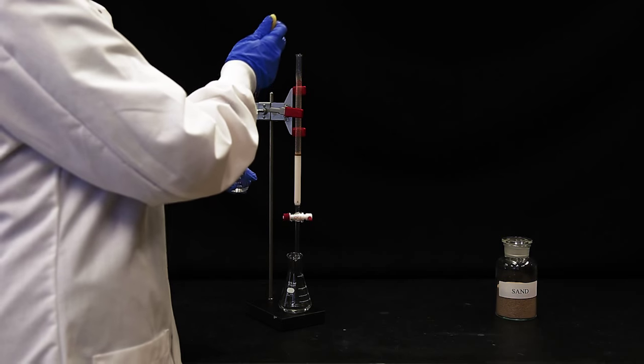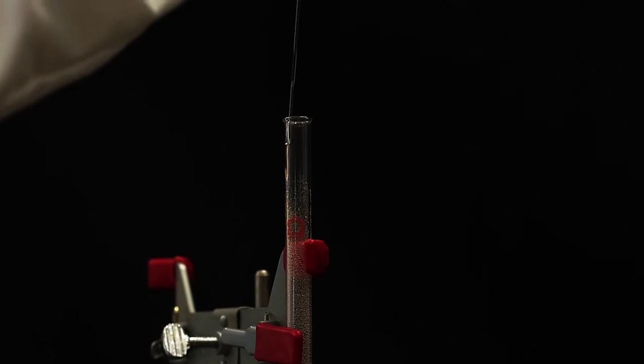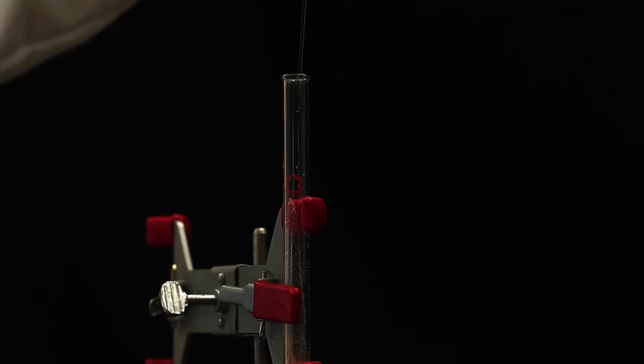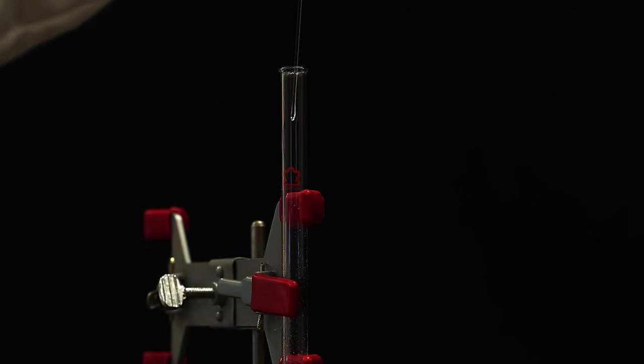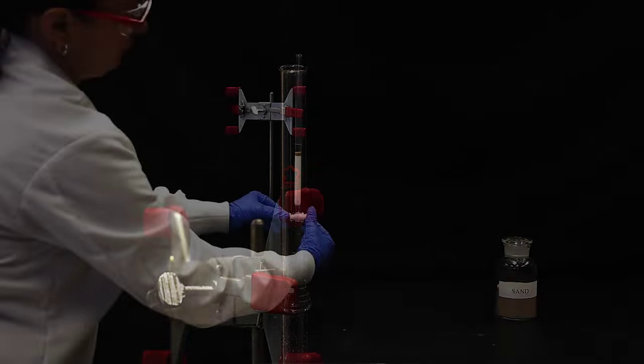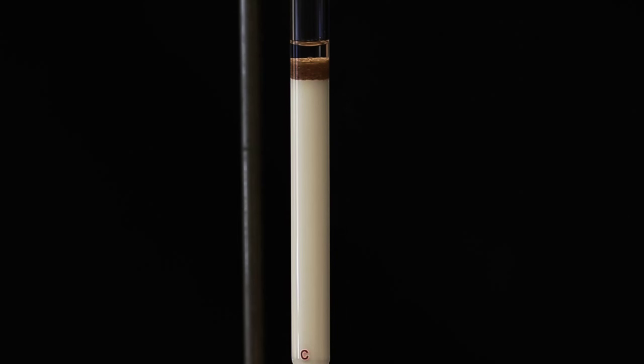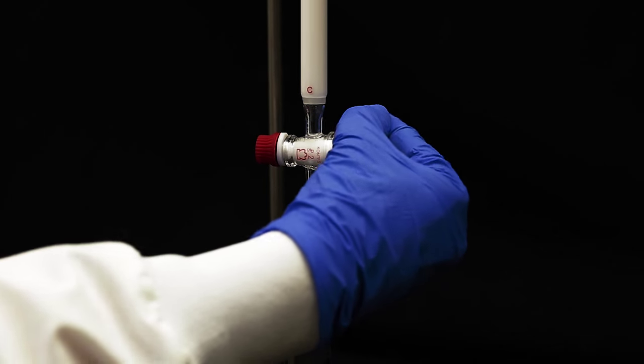Pipet hexane around the top of the column to wash the sand off the glass. Drain any excess solvent from the column so the solvent line reaches the top of the sand and close the stopcock.